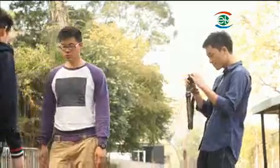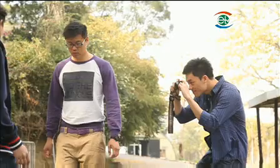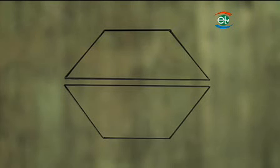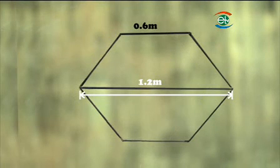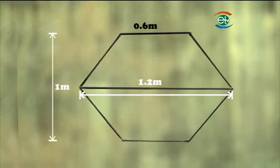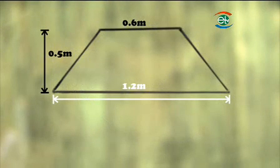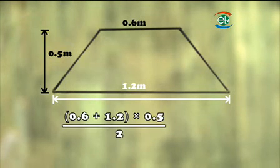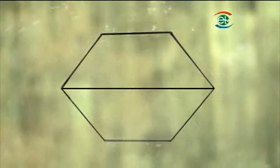Let's take a photo first. To calculate the area of the hexagon like this, we can use the dissection method. The hexagon can be cut into two trapeziums. If the height of each trapezium is 1 divided by 2, that is 0.5 metres, then the area of each trapezium is 0.6 plus 1.2 times 0.5 and then divided by 2, that is 0.45.